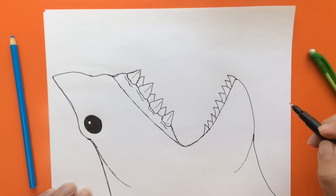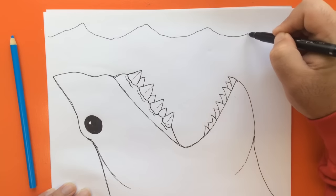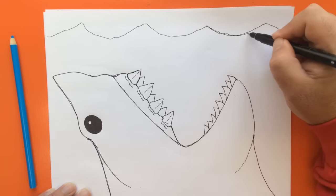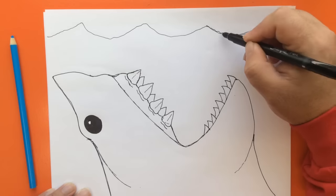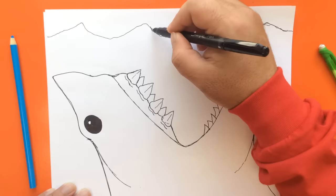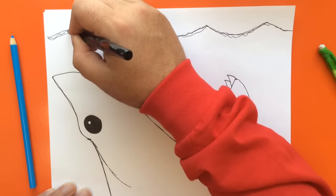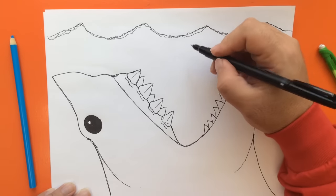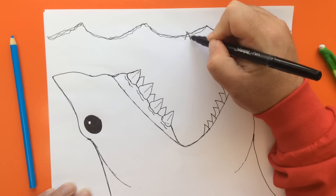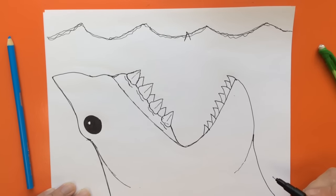But before I do that, I'm going to add some waves and swells where the surface of the ocean is. Just add a few ripples in here. And right here, I'm going to draw a dorsal fin of a smaller shark that is about to be a snack for megalodon.